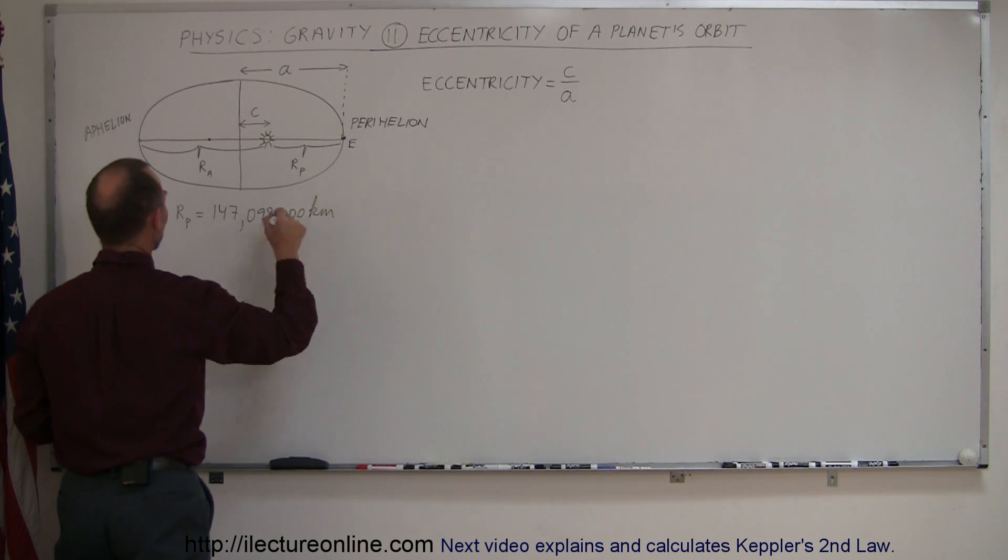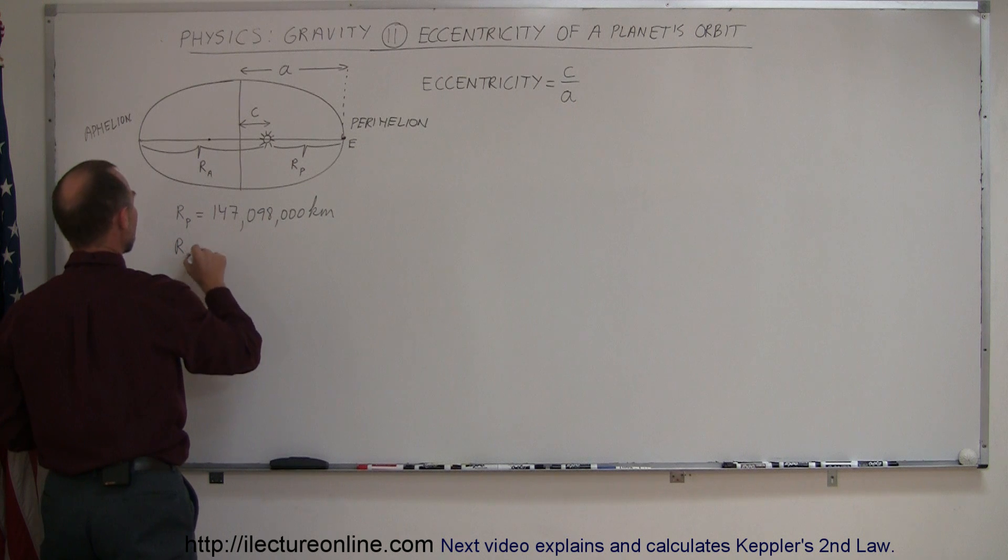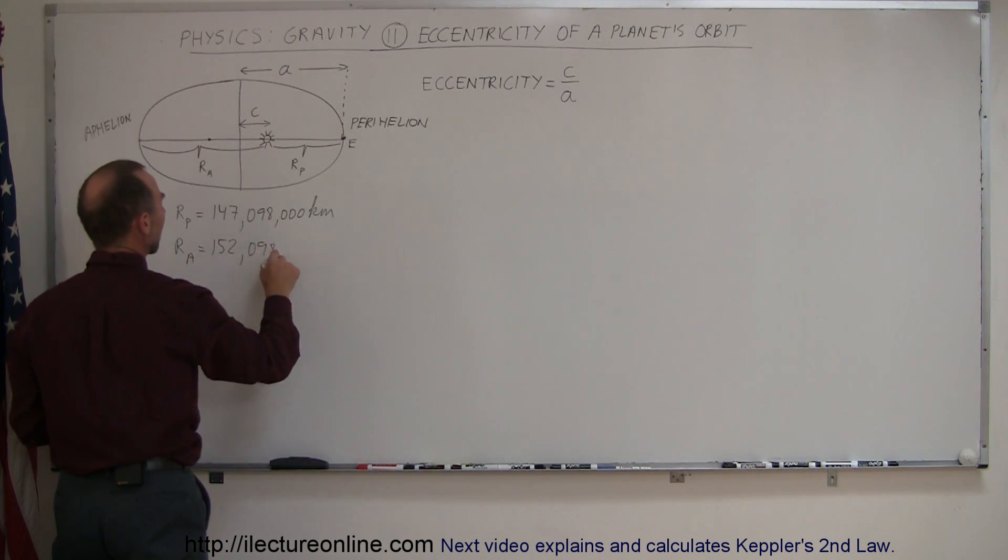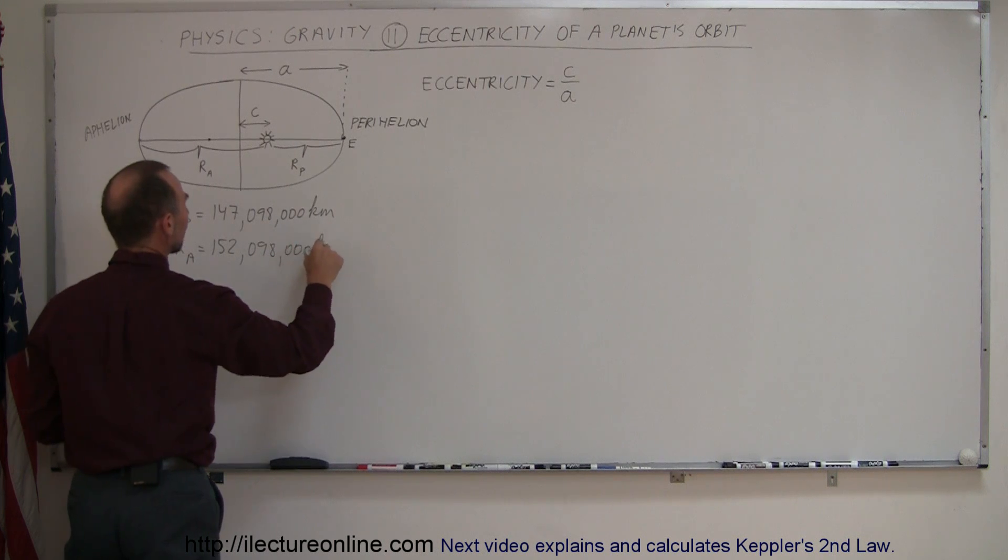And at aphelion, R sub A, the earth is about 152,098,000 kilometers away from the sun.